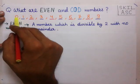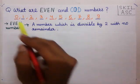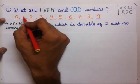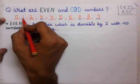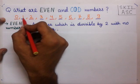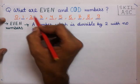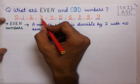We check the numbers. If we divide 0 by 2, the remainder will be 0, so 0 is an even number. If we divide 1 by 2, the remainder will not be 0, so 1 is not an even number. If we divide 2 by 2, the remainder will be 0, so 2 is an even number. If we divide 3 by 2, the remainder will not be 0, so 3 is not an even number.